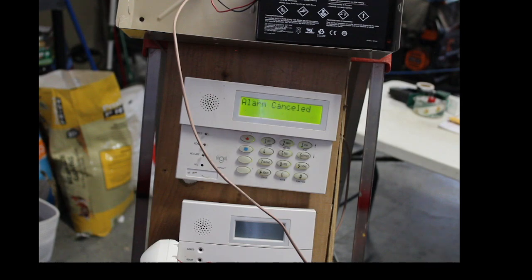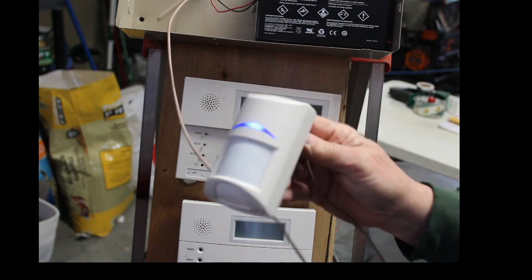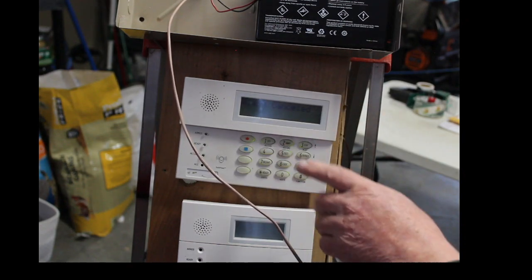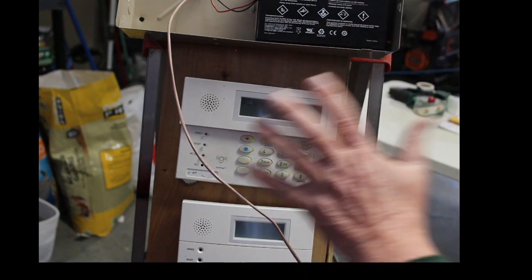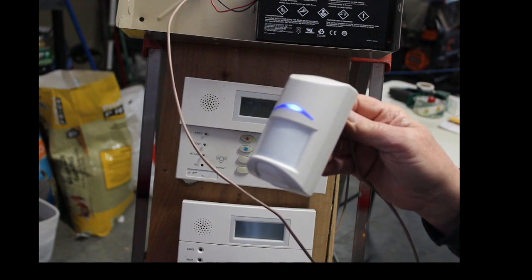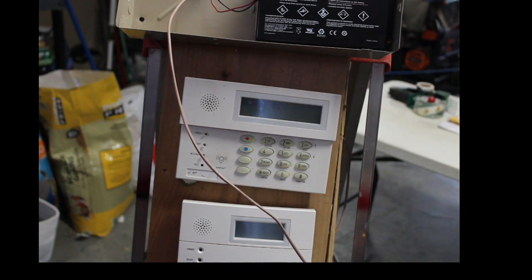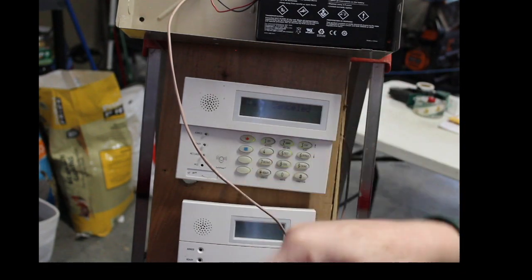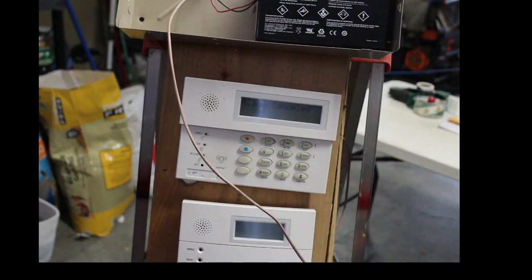All right, guys, that is how you program a hardwire motion detector into a SafeWatch Pro 3000 ADT system, Vista 10, Vista 20, Vista 15, and a Demco system. That is how you wire in and program a motion detector. All right, guys, give me a thumbs up, subscribe, ring the bell, buy me a coffee. I have no idea how you can buy me a coffee, but, you know, give me a thumbs up. Thanks, guys.